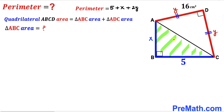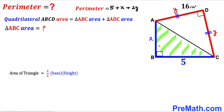Now we are going to calculate the area of right triangle ABC. Recall the area of a triangle formula: area equals one half times base times height. The dimensions of triangle ABC are x and 5, so the area of triangle ABC is going to be one half times x times 5, which simplifies to 5x divided by 2.